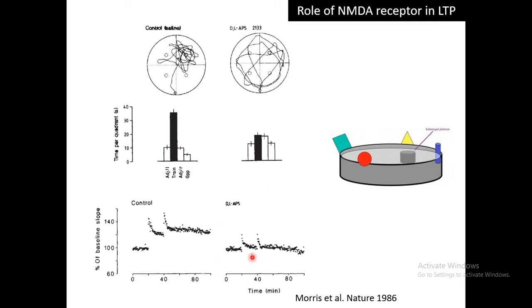If you block the NMDA receptor — the principal pathway for coincidence detection — the potentiated response after high-frequency stimulus is gone. In a control situation where the NMDA receptor is active, high-frequency stimulation produces a potentiated response expressed as a percentage increase of baseline EPSP slope. When the NMDA receptor is blocked by a pharmacological agent, the potentiation disappears. Furthermore, animals in which NMDA receptors were systemically blocked also performed poorly in spatial navigation tasks such as the Morris water maze.